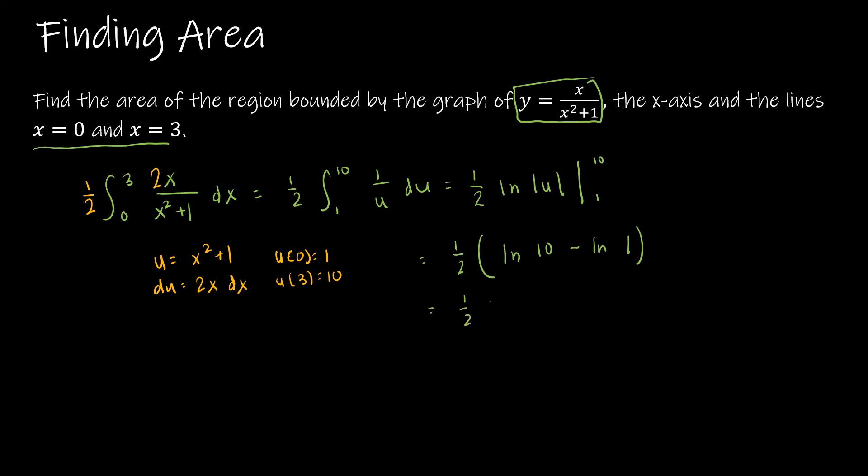So I get 1 half times the natural log of 10 minus 0, so I'm not even going to write the minus 0. And then I'm going to approximate it using my calculator, and get 1.151. So here is the exact solution, and then, of course, the approximated solution.